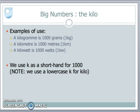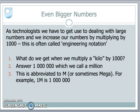So a thousand grams we write as kg, a thousand metres as km, and a thousand watts as kW. The lowercase letter K represents kilo. As technologists, we've got to be comfortable dealing with large and small numbers, and what we're going to start doing now is increase that kilo — multiply it by another thousand. This technique is called engineering notation — a way to scale our numbers up in increasing size.